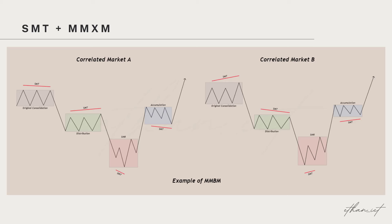Here is a diagram of what I mean when using SMT in confluence with market maker models. Most educators usually teach to look for SMT only at the smart money reversal, but when using SMT, it can also be applied to different phases of the market maker model. By studying this, you will be able to identify why explosive price movements occur. Here we have a market maker buy model. At every phase in the market, you will find SMT divergence. Starting with the original consolidation — this would have been the previous market maker sell model's smart money reversal turning into original consolidation — we find that first SMT divergence, and most likely you will have expansion in the market after that occurs.